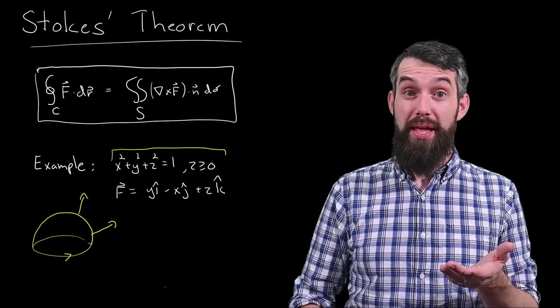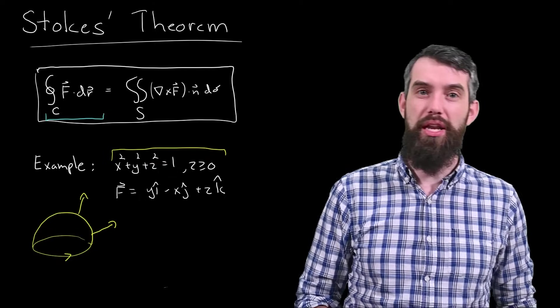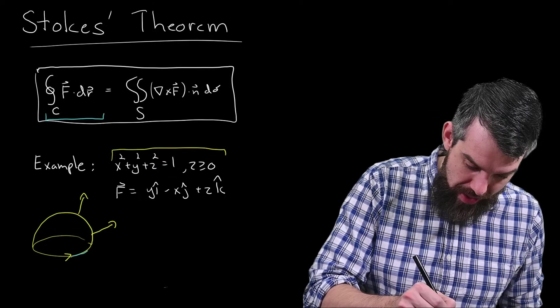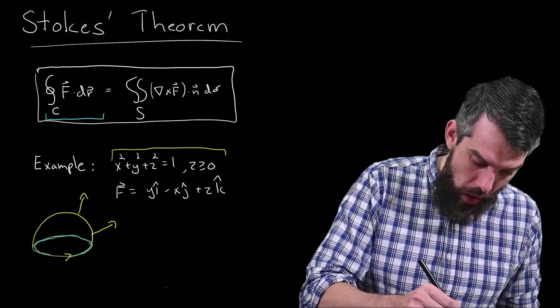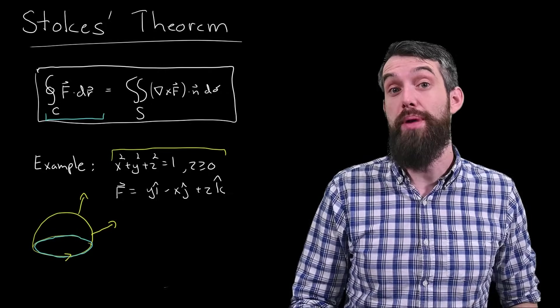Now, Stokes' Theorem is an equality between two relatively different things. On the left-hand side, it's the circulation around the curve. So maybe I'll just take the base curve and I'll draw it in blue here to indicate that's one question I could ask. What is the circulation around that curve?